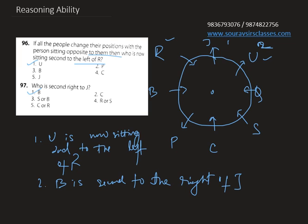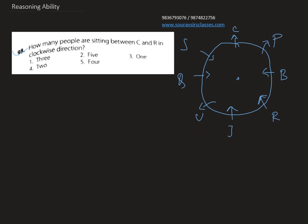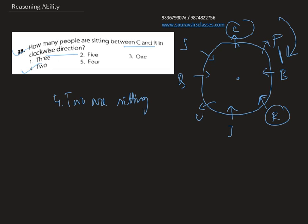Now let's see the next question. How many people are sitting between C and R in the clockwise direction? This is C and this is R. The clockwise direction is this way, and there are two people in between. So the right answer is option 4 — two people are sitting between C and R in the clockwise direction.